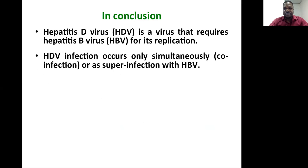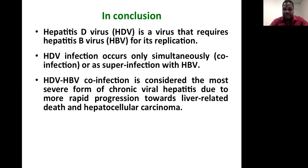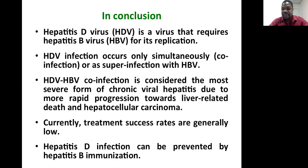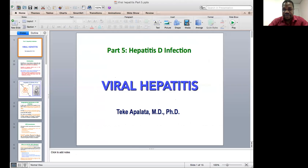In conclusion, hepatitis D is a virus that requires hepatitis B for its replication, and hepatitis D infection occurs only as co-infection or super infection with hepatitis B. Hepatitis D and B co-infection is considered the most severe form of chronic viral hepatitis due to more rapid progression toward liver-related death and hepatocellular carcinoma. Currently, treatment success rates are generally low, and hepatitis D infection can be prevented by hepatitis B immunization. Thank you very much — follow the last part of our lecture series on hepatitis, where we will discuss hepatitis E infection.